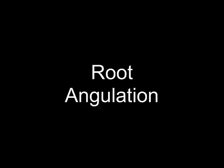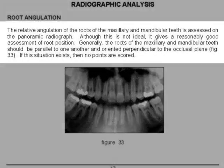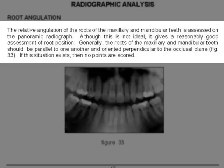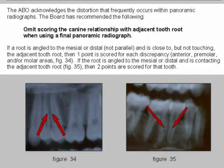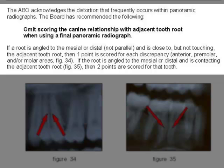Let's read the instructions for root angulation. The relative angulation of the roots of the maxillary and mandibular teeth is assessed on the panoramic radiograph. Although this is not ideal, it gives a reasonably good assessment of root position. Generally, the roots should be parallel to one another or oriented perpendicular to the occlusal plane. If this situation exists, then no points are scored. The ABO acknowledges the distortion that frequently occurs within panoramic radiographs.